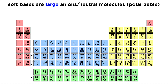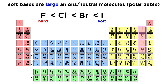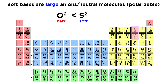Soft bases are larger anions and neutral molecules, which are more polarizable than their hard counterparts. For example, while fluoride is hard, iodide is very soft, and the softness increases going down the halogen group as radius increases. Likewise, while an oxide ion is hard, a sulfide ion is much softer, again due to the increased radius and polarizability.